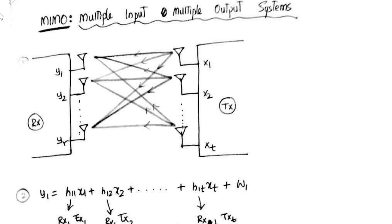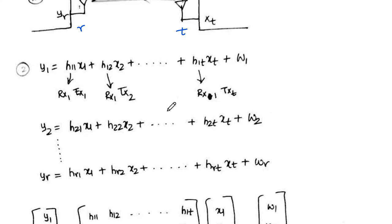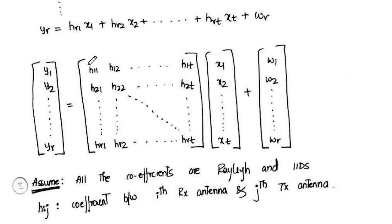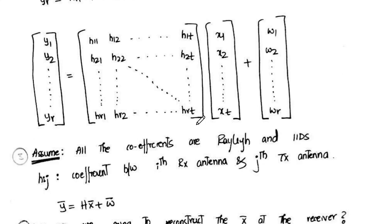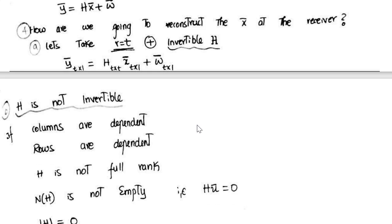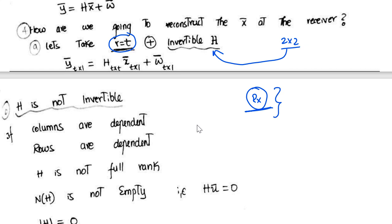In the previous video I had already considered the MIMO channel, but I had taken only the 2×2 case. Now we will take the generic case where the number of receive antennas is R and the number of transmit antennas is T. We can write the system equations and represent them in matrix form. In the previous video I was mainly considering R equal to T, and the condition that H is invertible, and we saw how to perform receive beamforming.